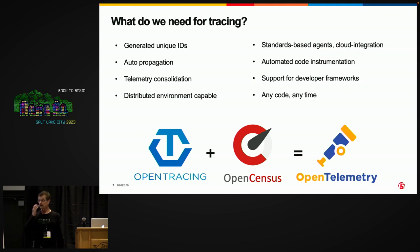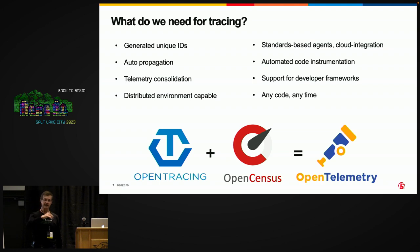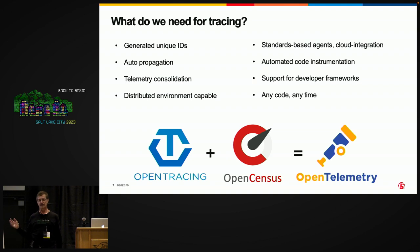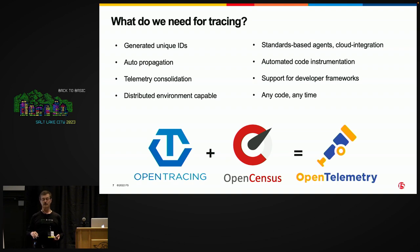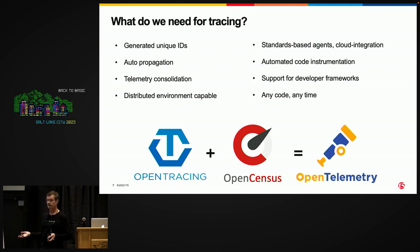This all really caught on back in about 2010 with something called Dapper out of Google. Dapper begat something called Census, both of which were internal to Google. That became an open source project called OpenCensus. At the same time, OpenTracing had come into being as an open source project, and when the CNCF formed in 2015, became part of the CNCF activity space. These two were competing spaces. OpenTracing said, you go figure out what you're going to do with it. OpenCensus said, here's some really cool things for analysis. So the two merged and became what we now call OpenTelemetry.